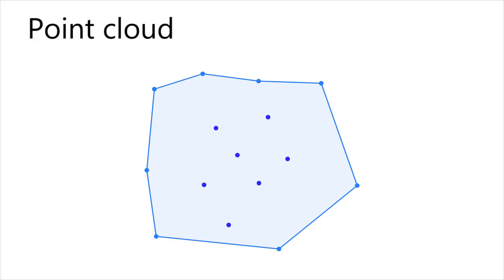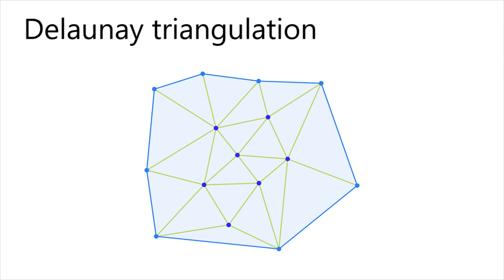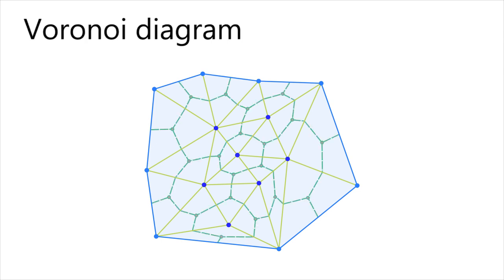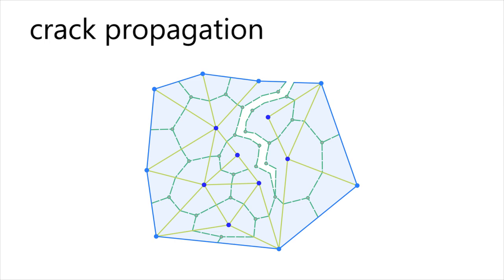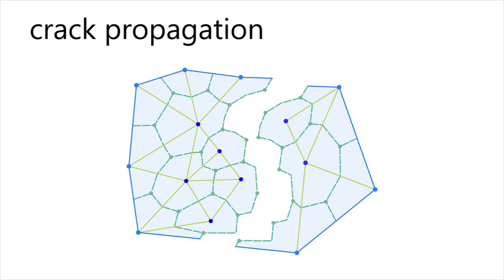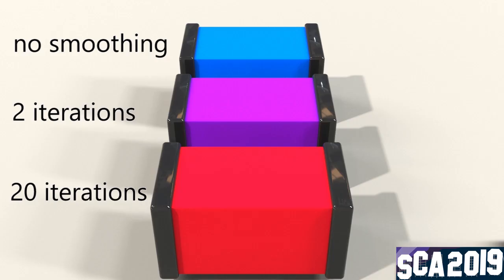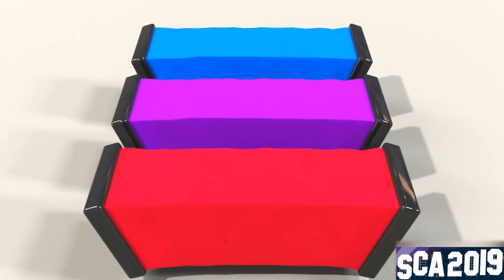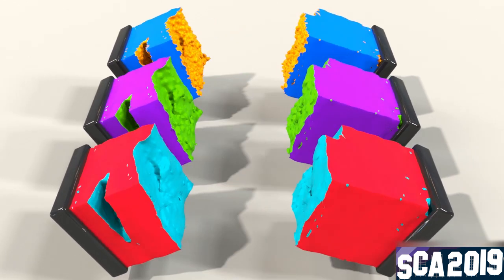We used Delaunay triangulation to create a TET mesh, then split it into a degenerated Voronoi diagram to create a fractured mesh. For Lagrangian MPM, we simply used the TET mesh that was used for simulation. The quality of the cracked surface is limited by resolution. Without further processing, the outcome can be rather jagged.